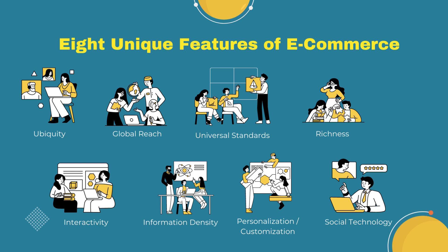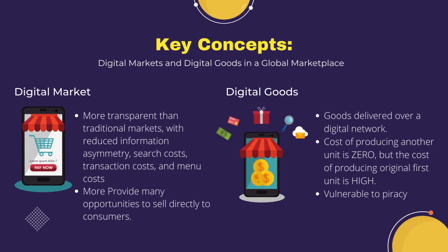Information density: the technology reduces information costs and raises quality. We can easily rate the product, communicate with customers, and the information needed by the customer is already given and can be posted online easily. Personalization and customization: the technology allows personalized messages to be delivered to individuals as well as to groups. Lastly, social technology — the most popular feature of e-commerce — supports content generation and social networking. The location, timing, and revenue models of businesses are based in part on the cost and distribution of information. The internet has created a digital marketplace where millions of people all over the world can exchange massive amounts of information directly, instantly, and free.